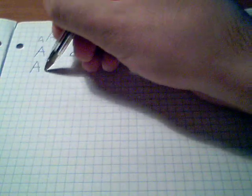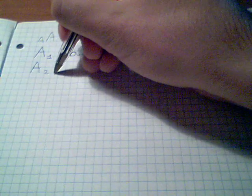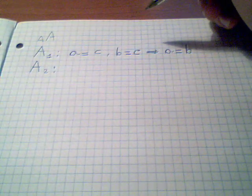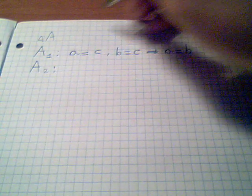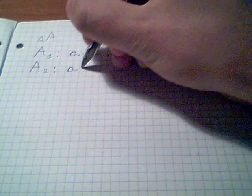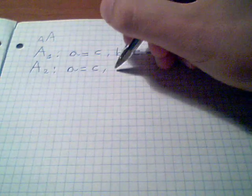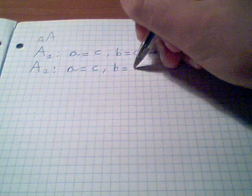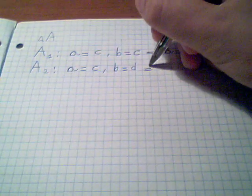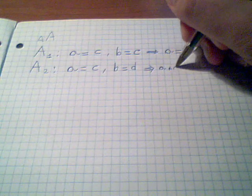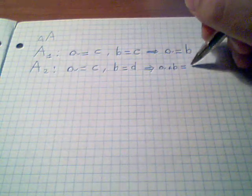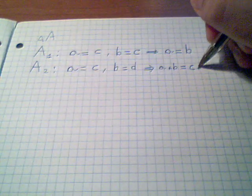Axiom number two says that if we sum equal things to equal things we get equal things. Using again our algebra, if A is equal to C and B is equal to D, then A plus B will be equal to C plus D.